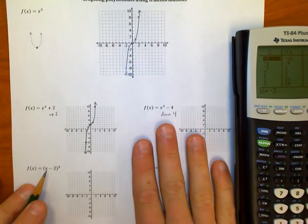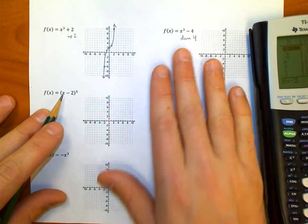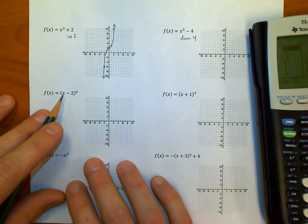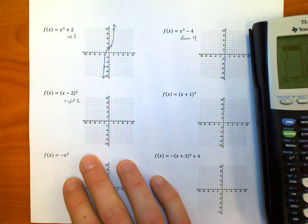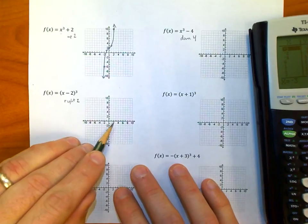Over here, this is going to move it two units just like it did with parabolas. Which direction is it going to move it? It's going to move it to the right—right two.